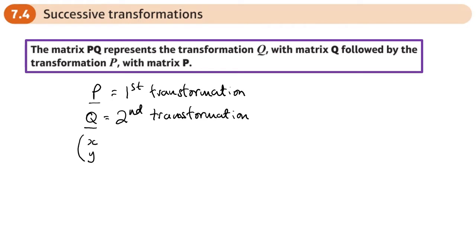So this is where I start. Now, the order that we do it to find a new point is that the transformation matrix we do first needs to be the one next to the points. The transformation that you do second needs to be the next furthest away. So this is the first transformation. This is the second.